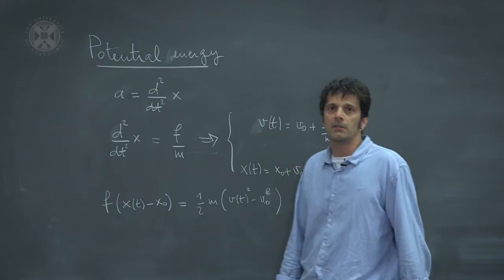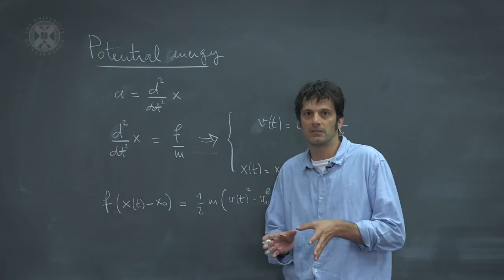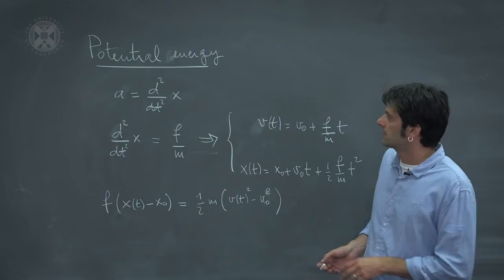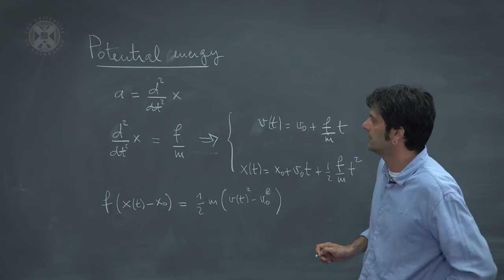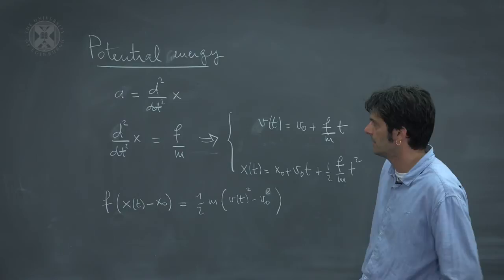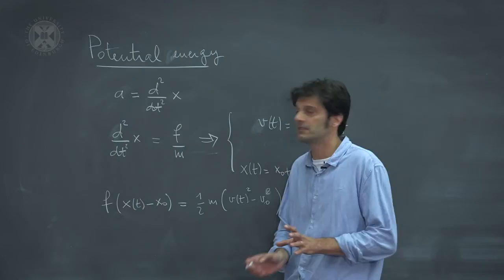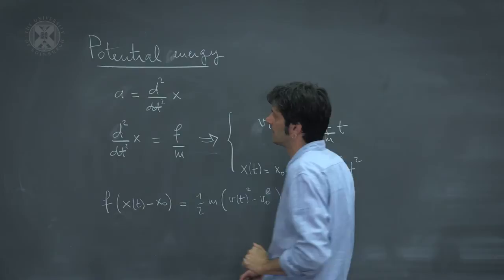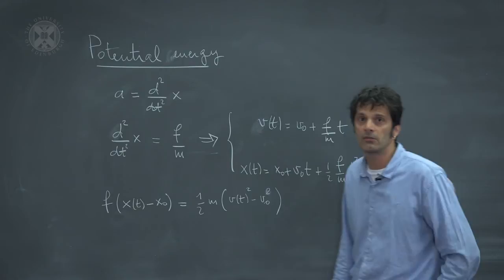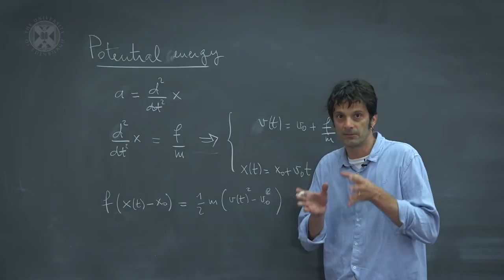So far we've discussed conservation laws for isolated systems with no forces acting. Now we take another step and see what happens when there is a non-vanishing force acting on our system. To keep it simple, we still consider a one-dimensional system with a single coordinate x, and we consider a force which is constant as a function of time. So the system is no longer isolated — there is a constant force acting on it.